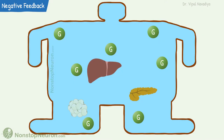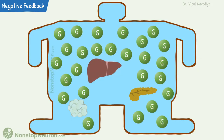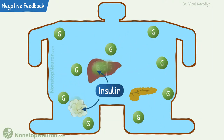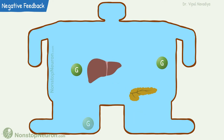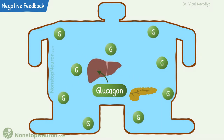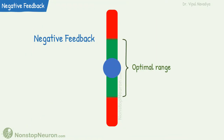For example, when glucose level increases, the pancreas releases insulin. This insulin increases glucose uptake in liver and fat, so the glucose level comes back to the initial value. On the other hand, if glucose level decreases, the pancreas releases glucagon. This glucagon makes the liver release glucose, so glucose level increases. Thus, the negative feedback mechanism keeps the parameter within an optimal range.